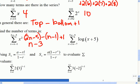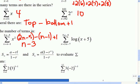And what about the next one? This time, we went top minus bottom plus 1, it'd be 2n plus 3.